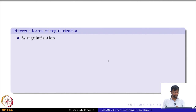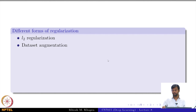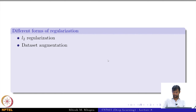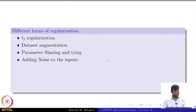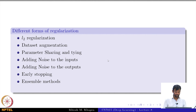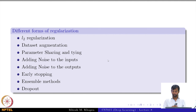Today we are going to look at different forms of regularization, starting with L2 regularization. Some of these are mathematically motivated, some are heuristics or empirical. Dataset augmentation is one empirical approach. Parameter sharing and tying, adding noise to the inputs, adding noise to the outputs, early stopping, ensemble methods, and dropout — these are all things we are going to discuss, all in the context of regularization where we want to avoid excessive model complexity.